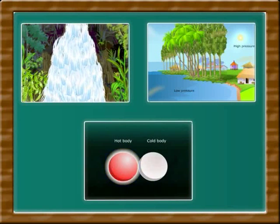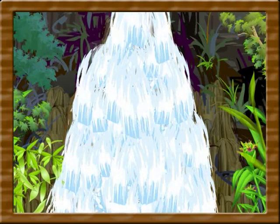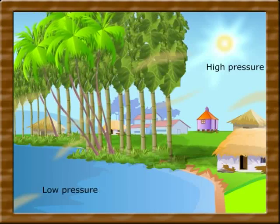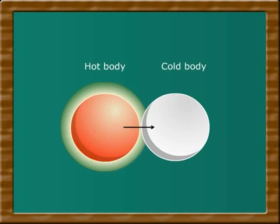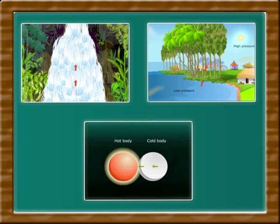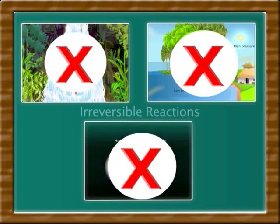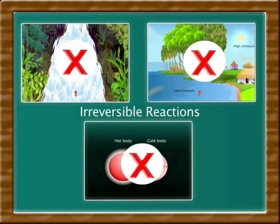Natural processes also show examples of irreversible processes such as water flowing down the hill, wind blowing from high pressure to low pressure, or flow of heat from hot body to cold body. In all these cases, in the similar conditions, it is not easy to revert these processes. So, they represent irreversible reactions.